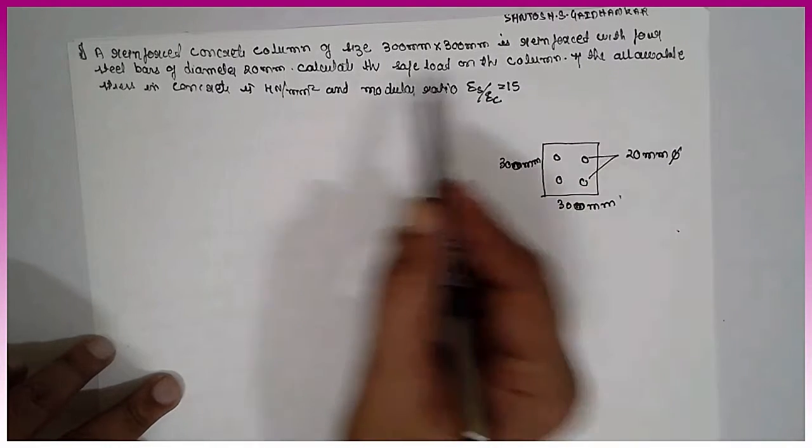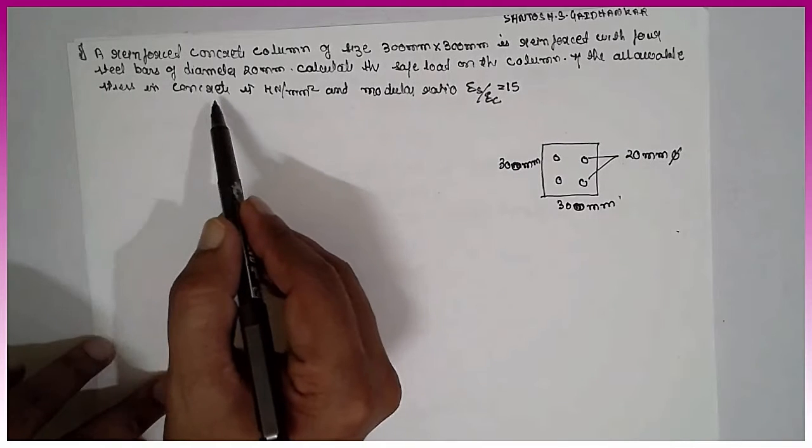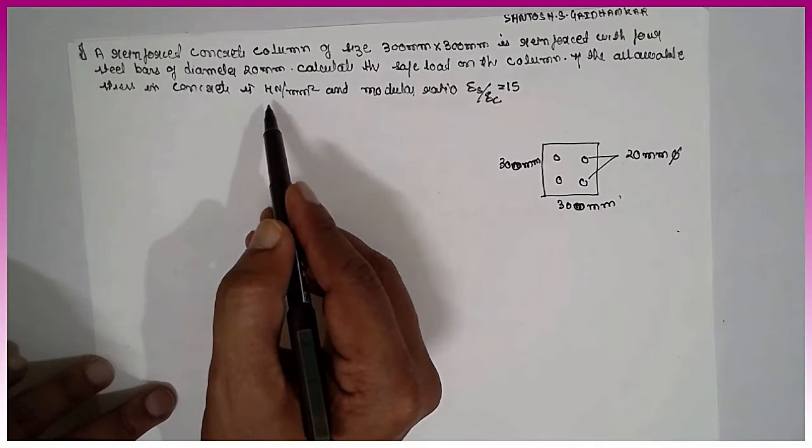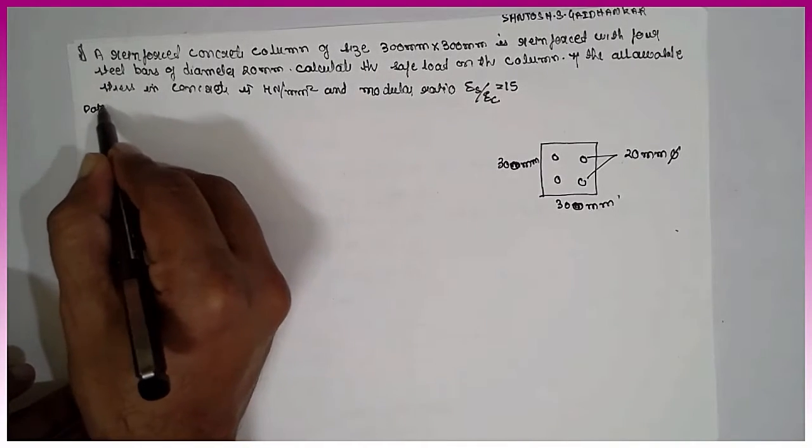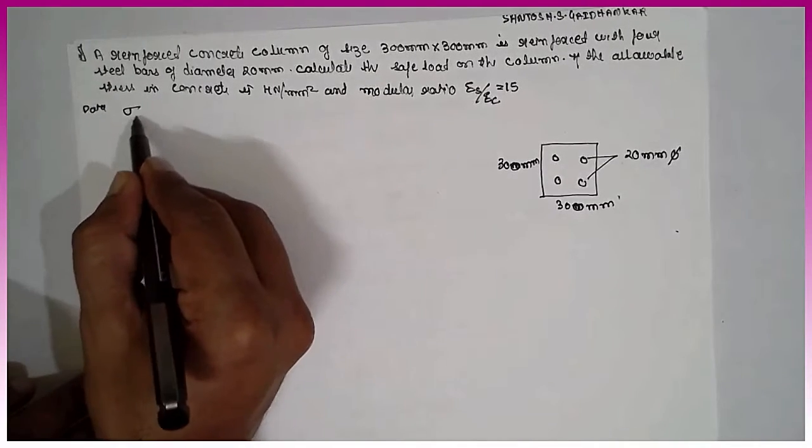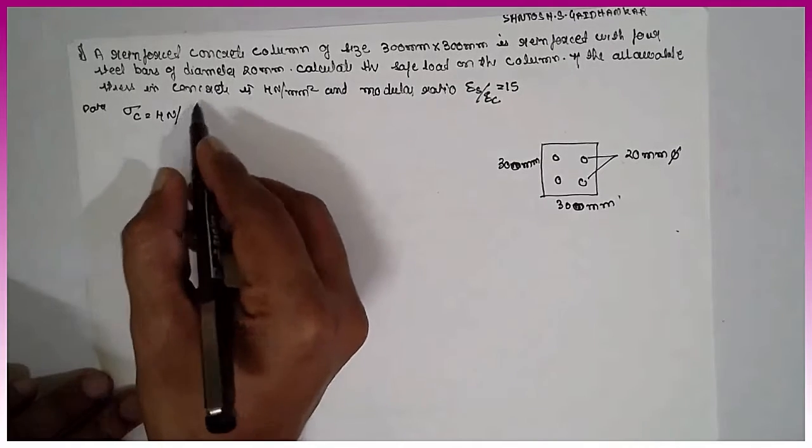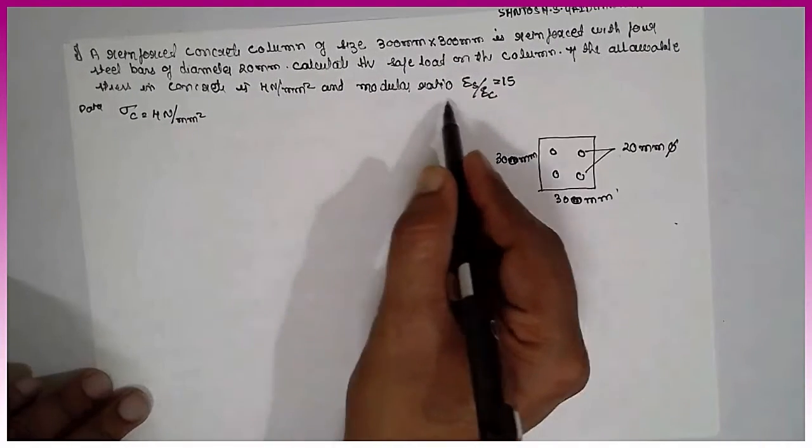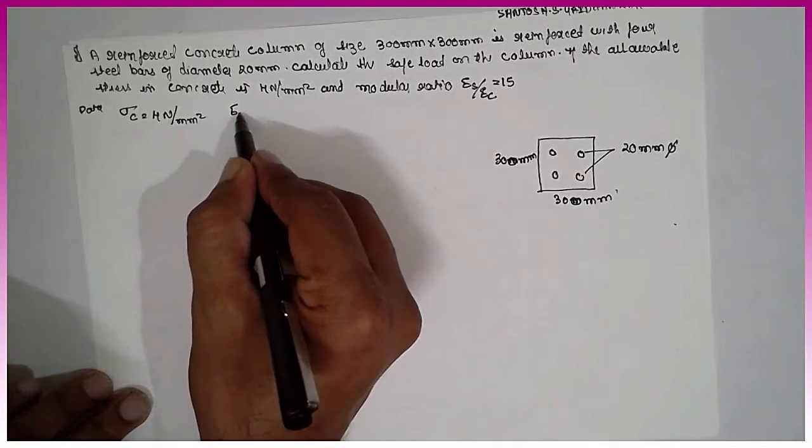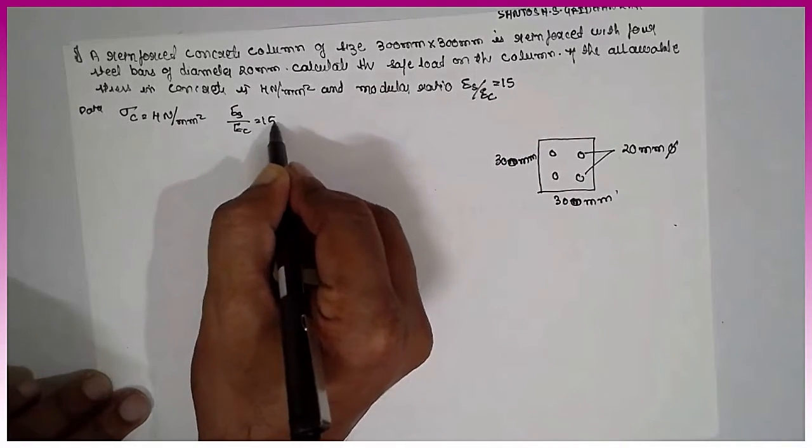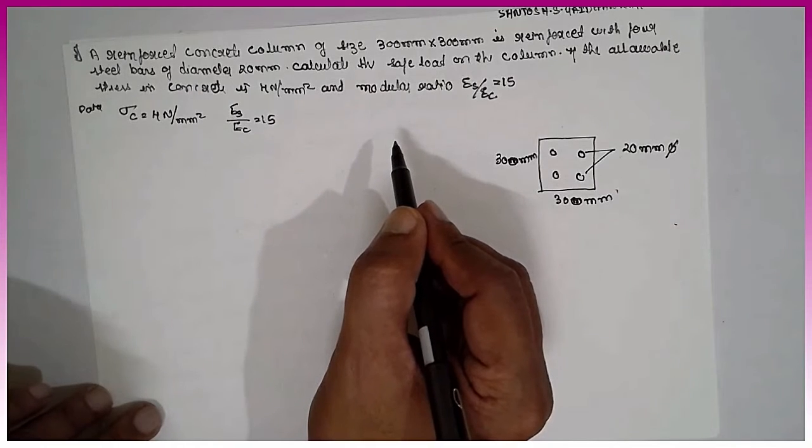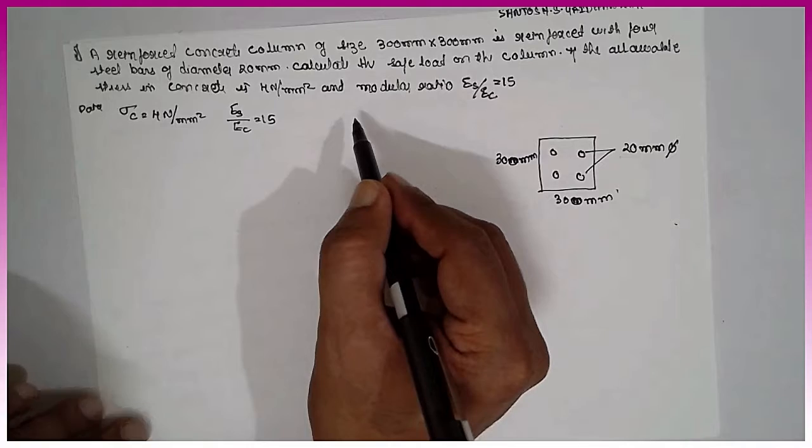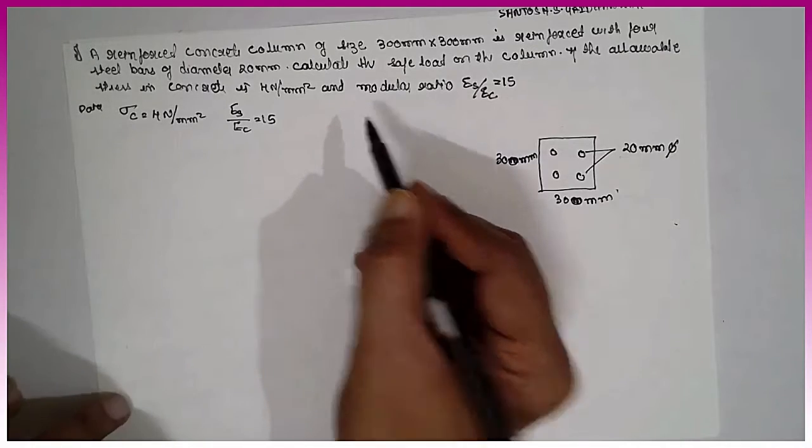If the allowable stress in the concrete is 4 Newton per mm square, Sigma C is equal to 4 Newton per mm square, and modulus ratio Es by Ec is 15. We have to calculate the safe load.